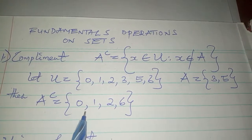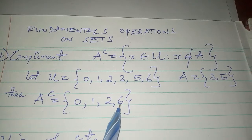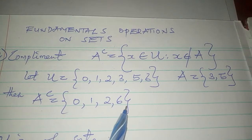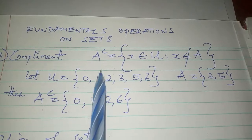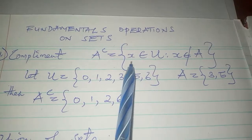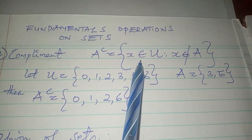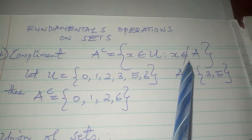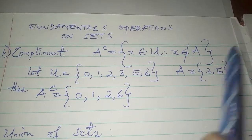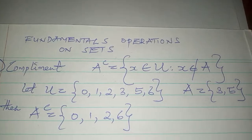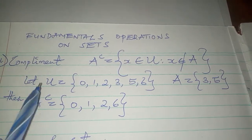Then our A complement will be 0, 1, 2, 6. These are elements that are contained in the universal set and the same elements are not contained in the set A. Now we have the complement.